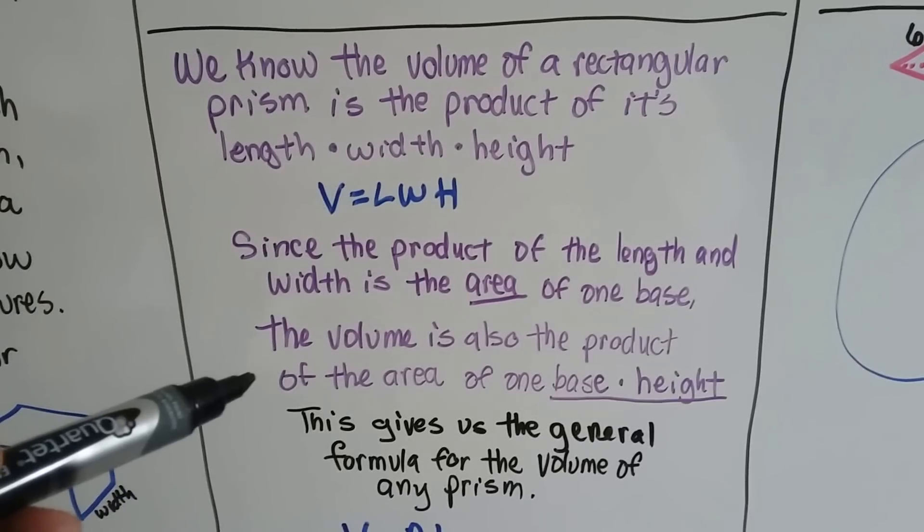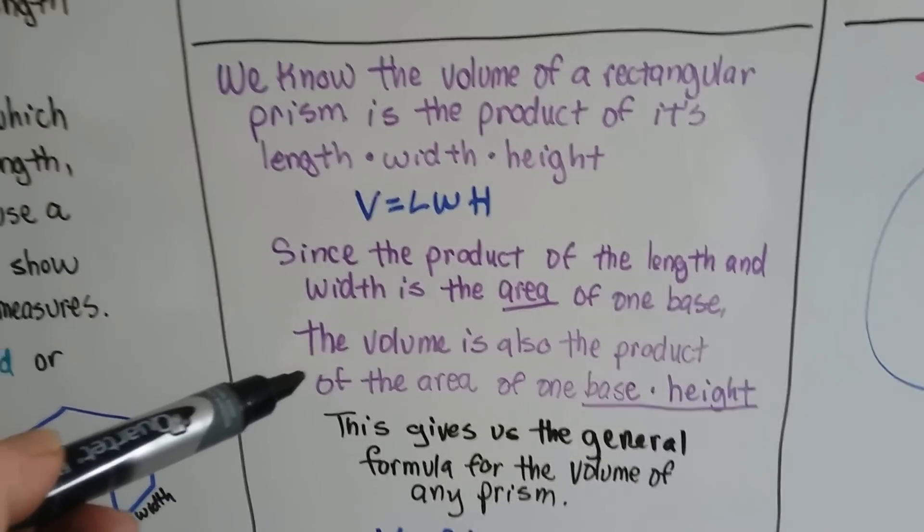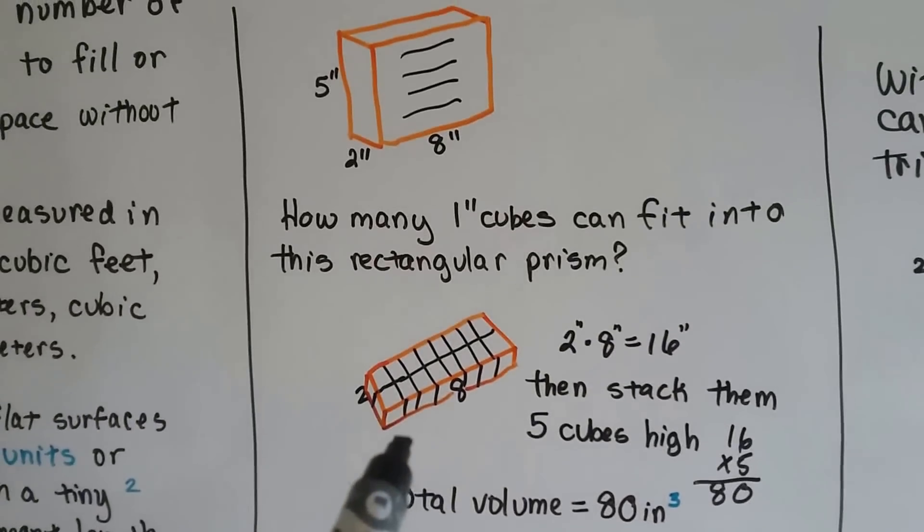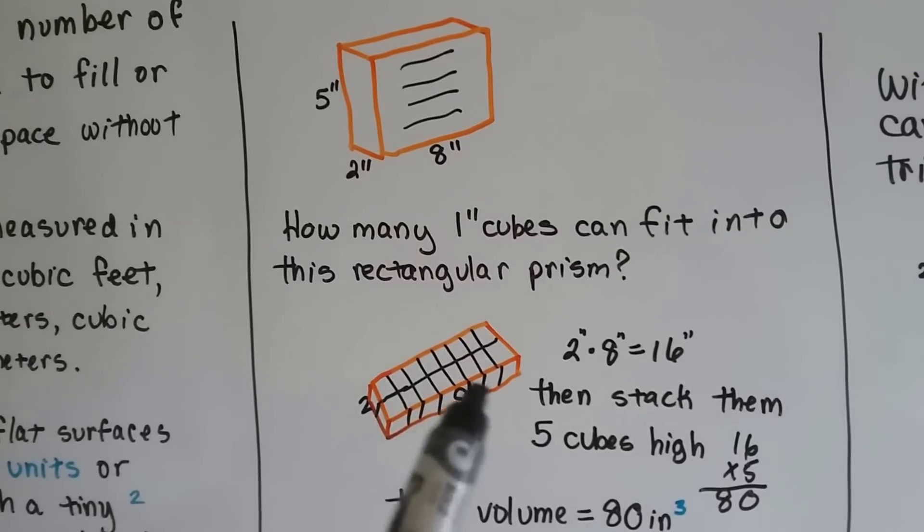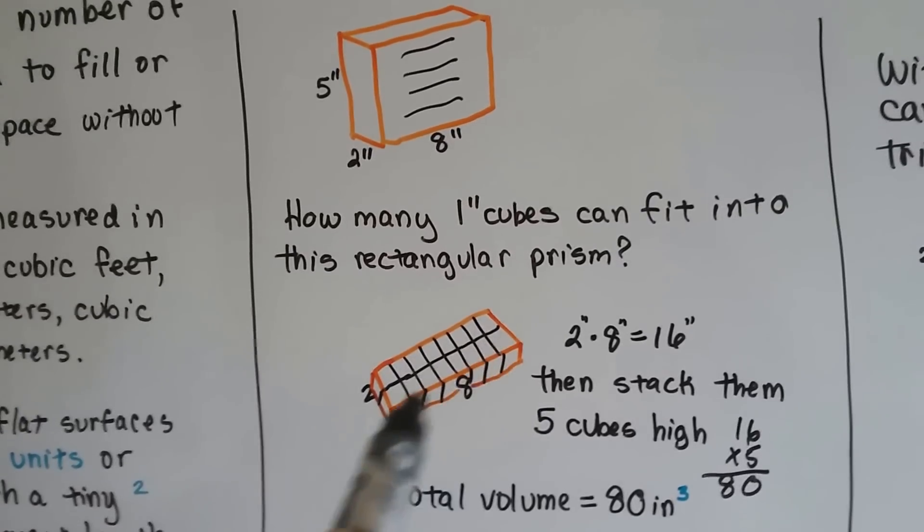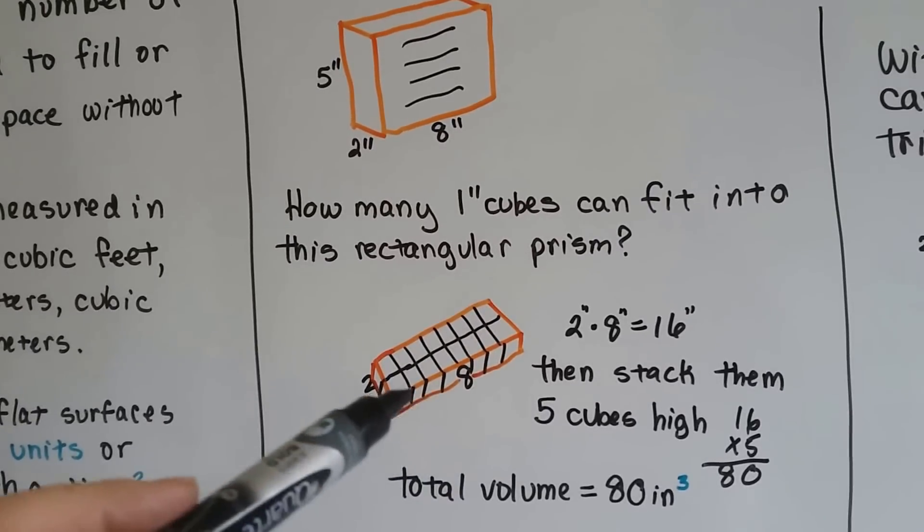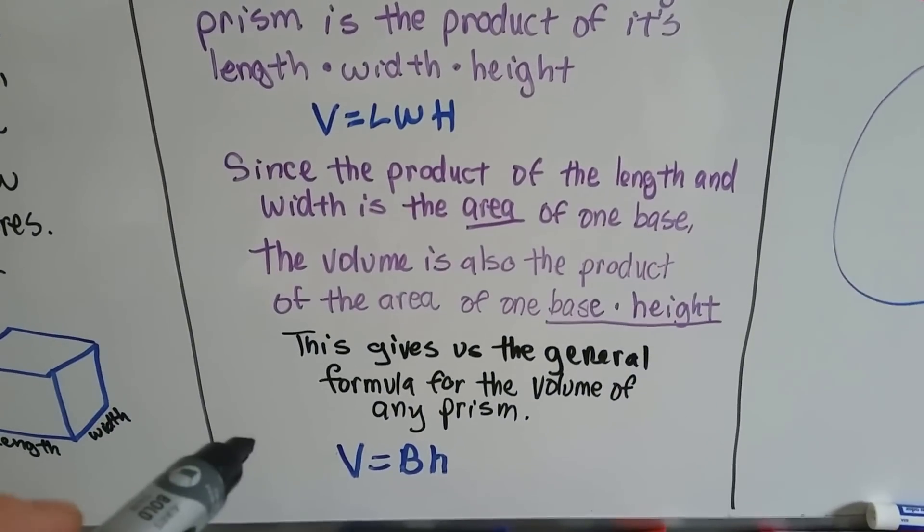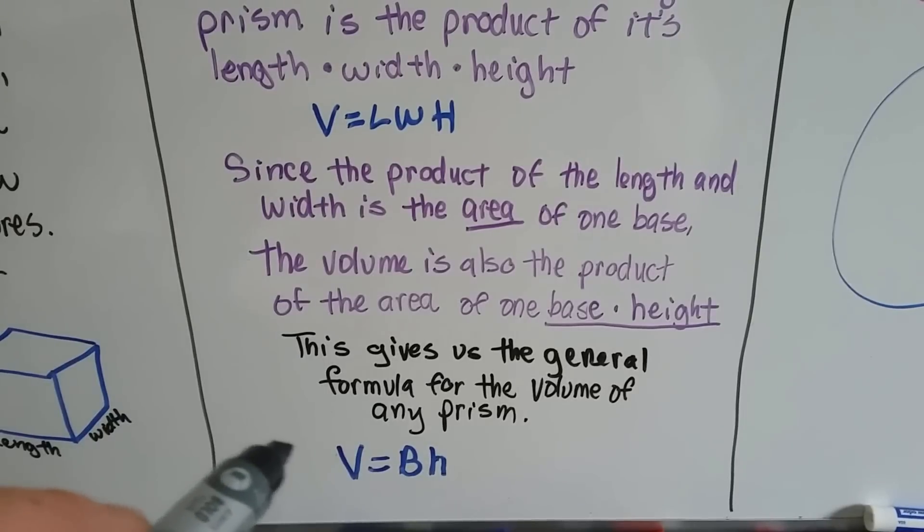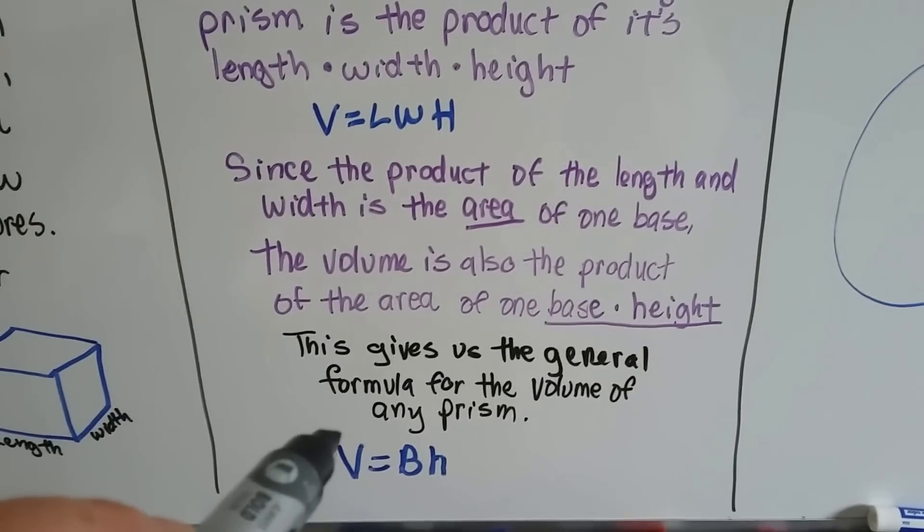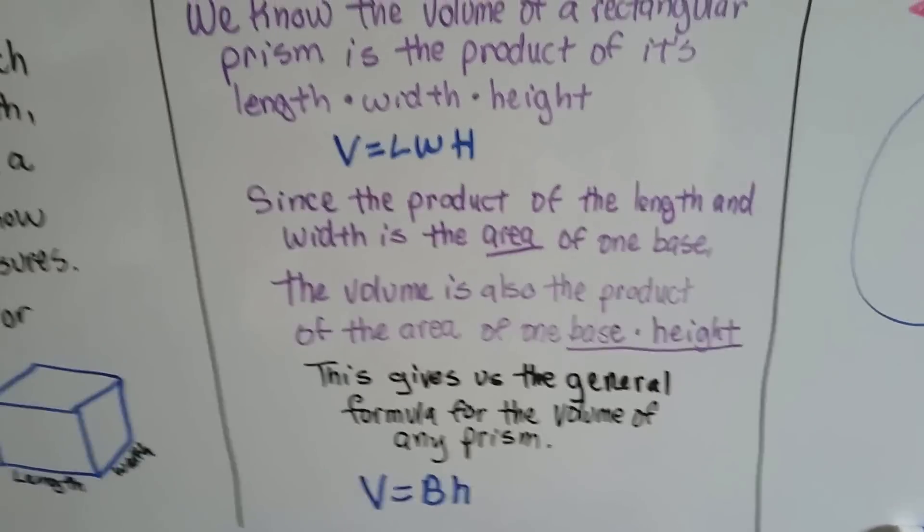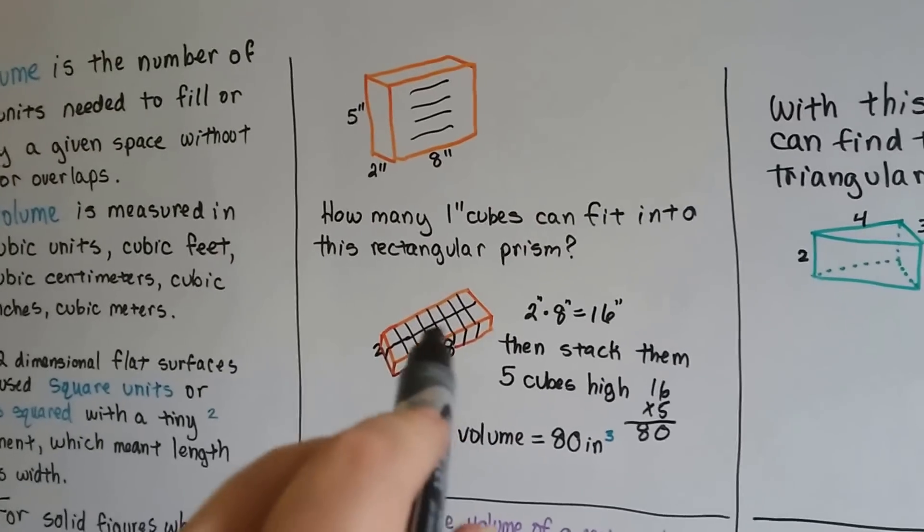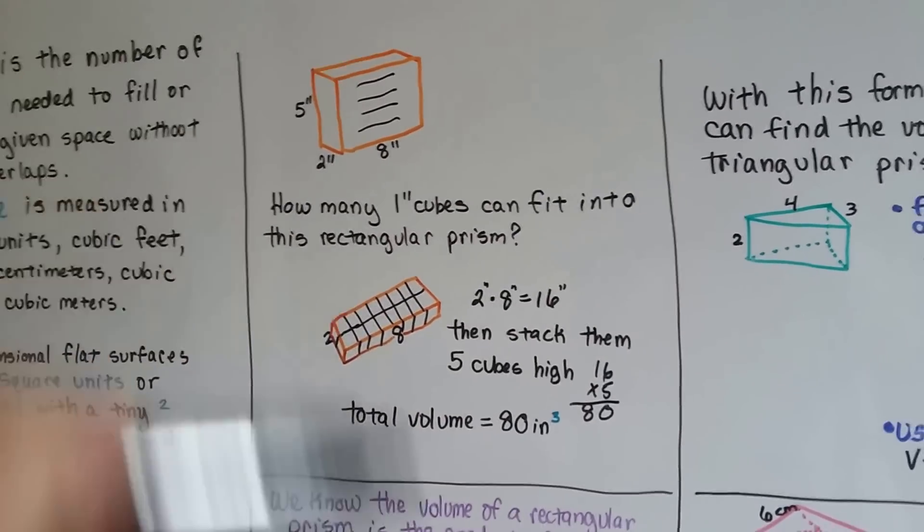Just like we did here, we did one base: 2 times 8, and then we multiplied by the height going up. This gives us the general formula for the volume of any prism: V = B·h. If we can find out what the base is, we just multiply it by the height and we're done.